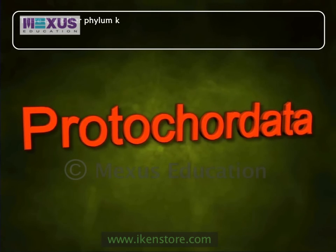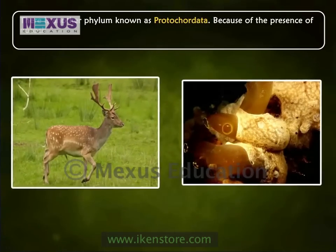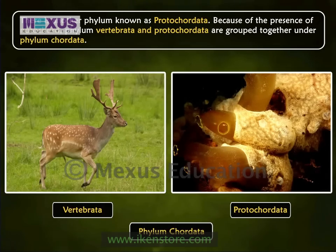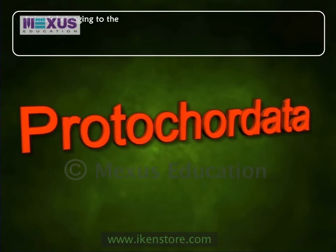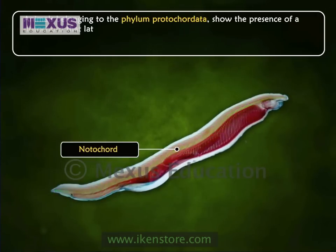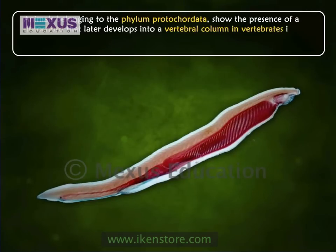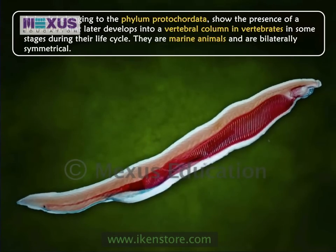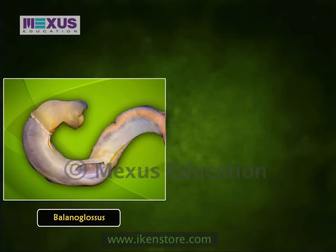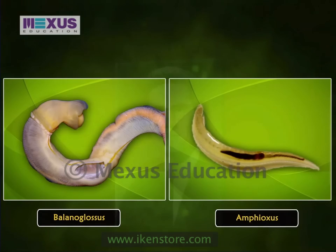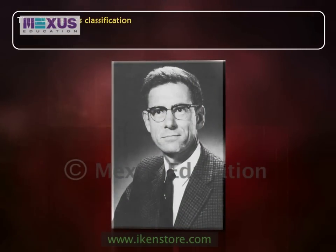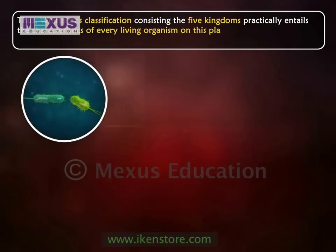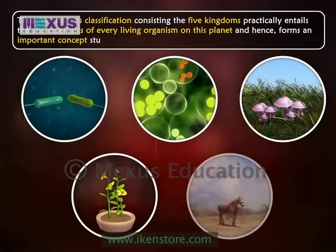There is another phylum known as Protochordata. Because of the presence of a notochord, phylum Vertebrata and Protochordata are grouped together under phylum Chordata. Animals of phylum Protochordata show the presence of a notochord that later develops into the vertebral column in some stages of their life cycle. They are marine animals and are bilaterally symmetrical. Examples are Balanoglossus and Amphioxus. Thus, this classification covering five kingdoms encompasses the characteristics of every living organism on this planet and forms an important concept in science.